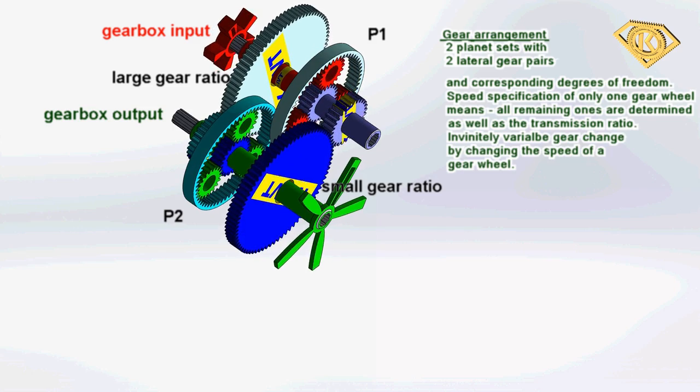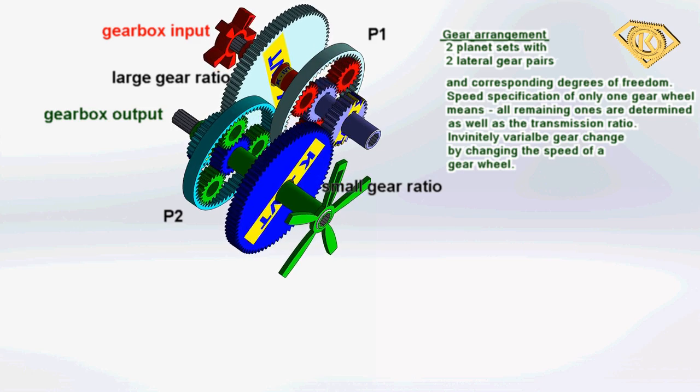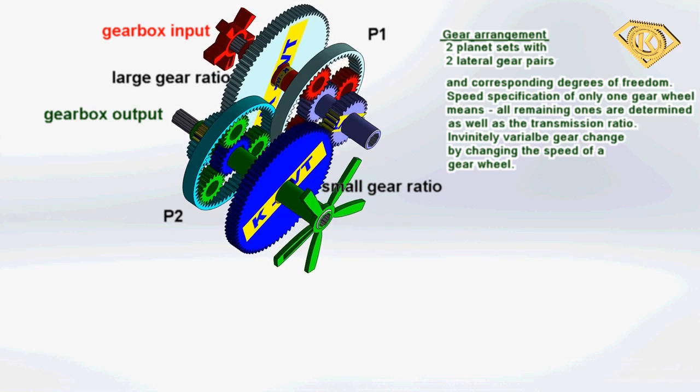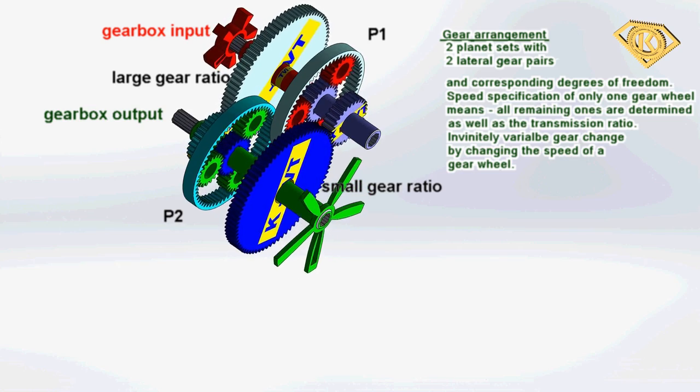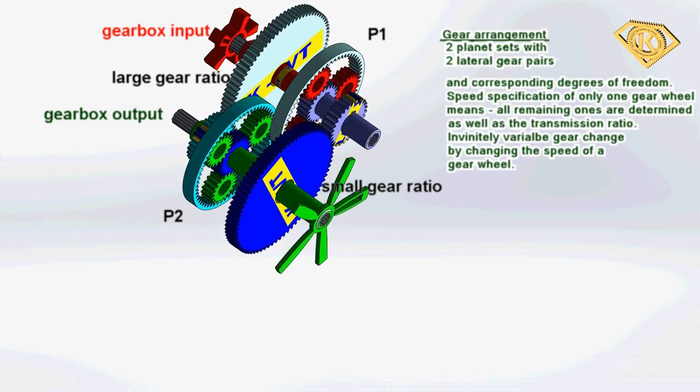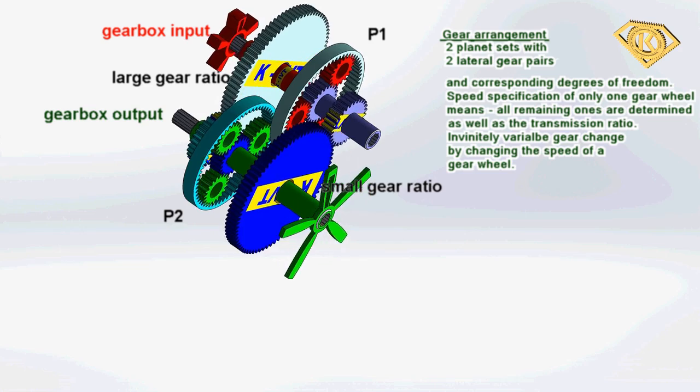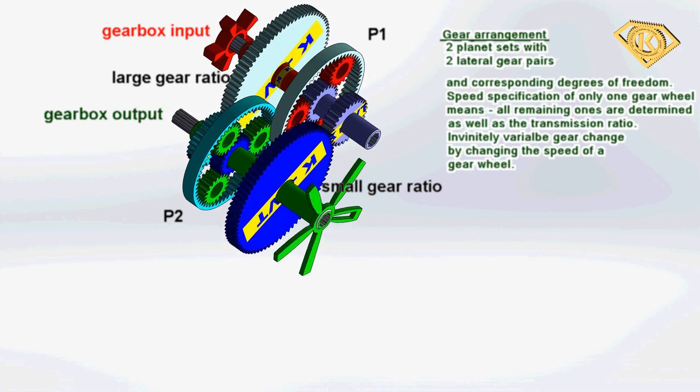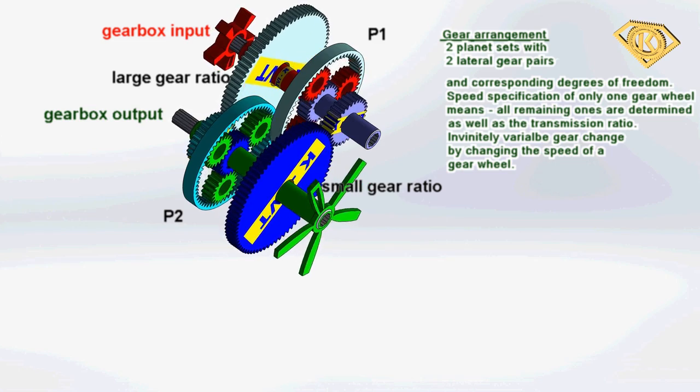In order to change the speed of a gear wheel of the gear arrangement, arbitrary influence can be applied, even from outside. The most easy thing to change the speed of a gear wheel would be an external speed variable motor, which by changing the speed, also changes automatically the transmission ratio of the output of the gear arrangement.